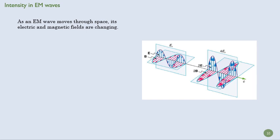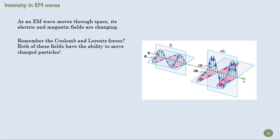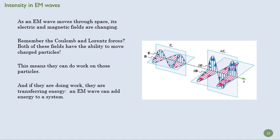So an EM wave moves through space. Its electric and magnetic fields are changing. So that should ring some bells for us. When we think about changing magnetic fields and think about electric fields, what do those do to charges? Well, they create forces on those charges. So these waves actually have the ability to move charge particles. And that means that they're going to do work on these particles. If you're going to push those particles and add energy to them, then you know that you're doing work to them. And if you're doing work, then you're transferring energy. So an EM wave can add energy to a system.